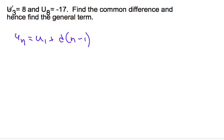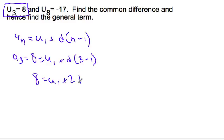If I plug values in for this first term here, I can say that u3, meaning n is 3, equals 8, equals u1 plus d times 3 minus 1. And so here's one equation. I'll tidy it up a little bit: 8 is equal to u1 plus 2d. And so I have two variables to find.